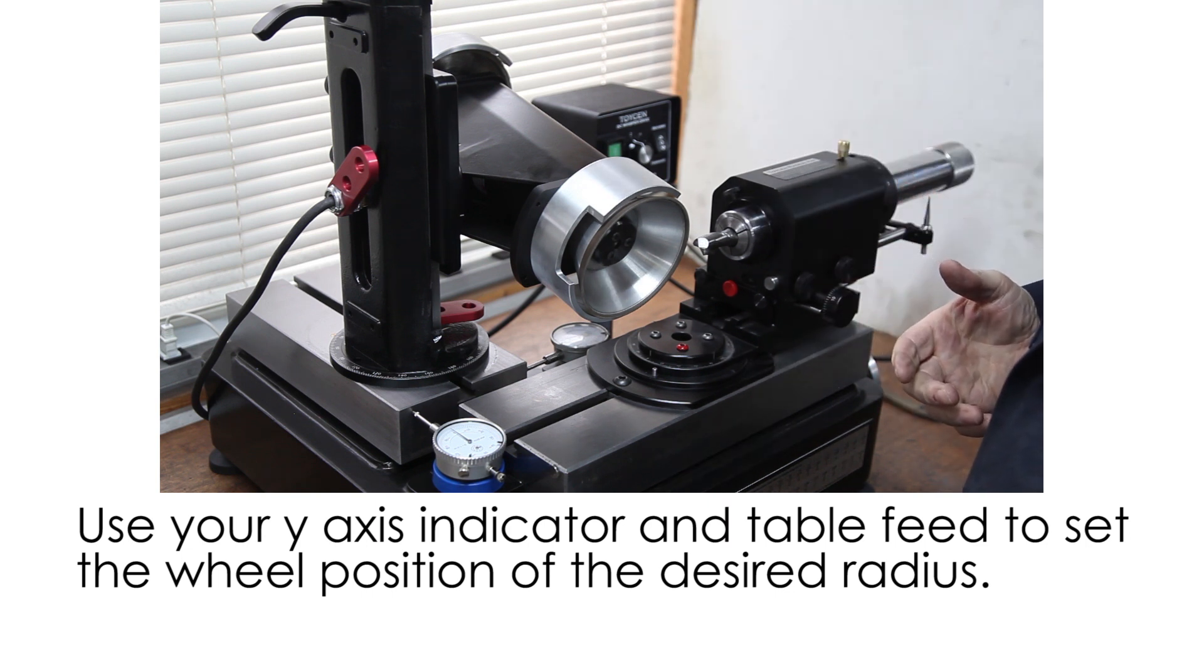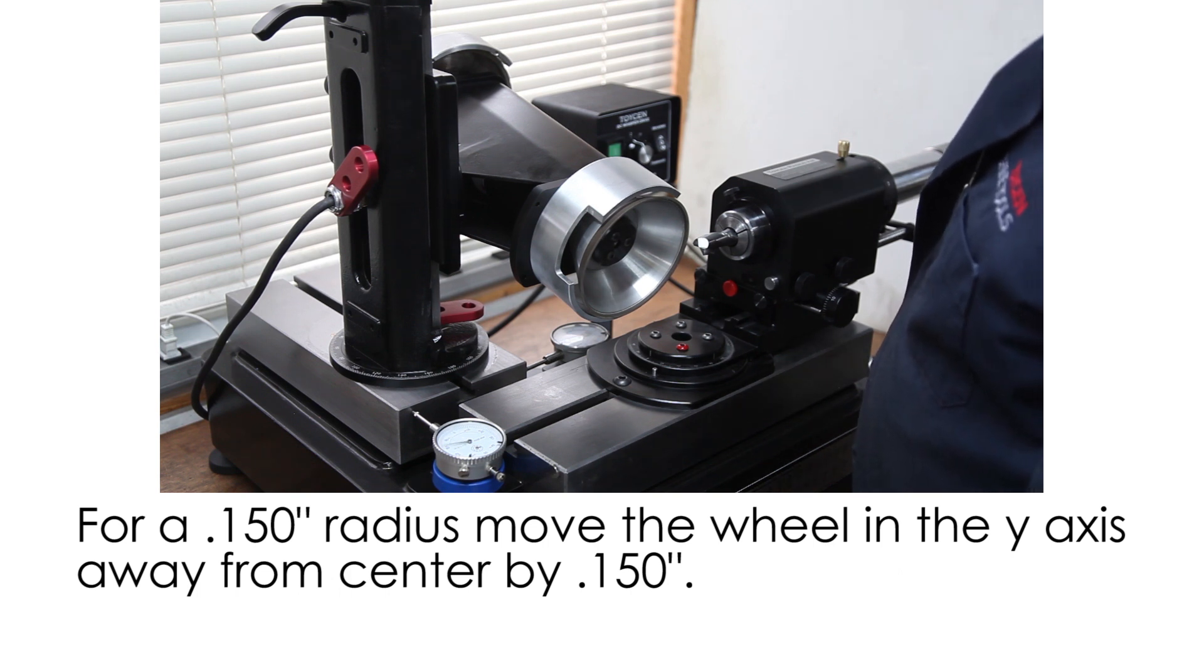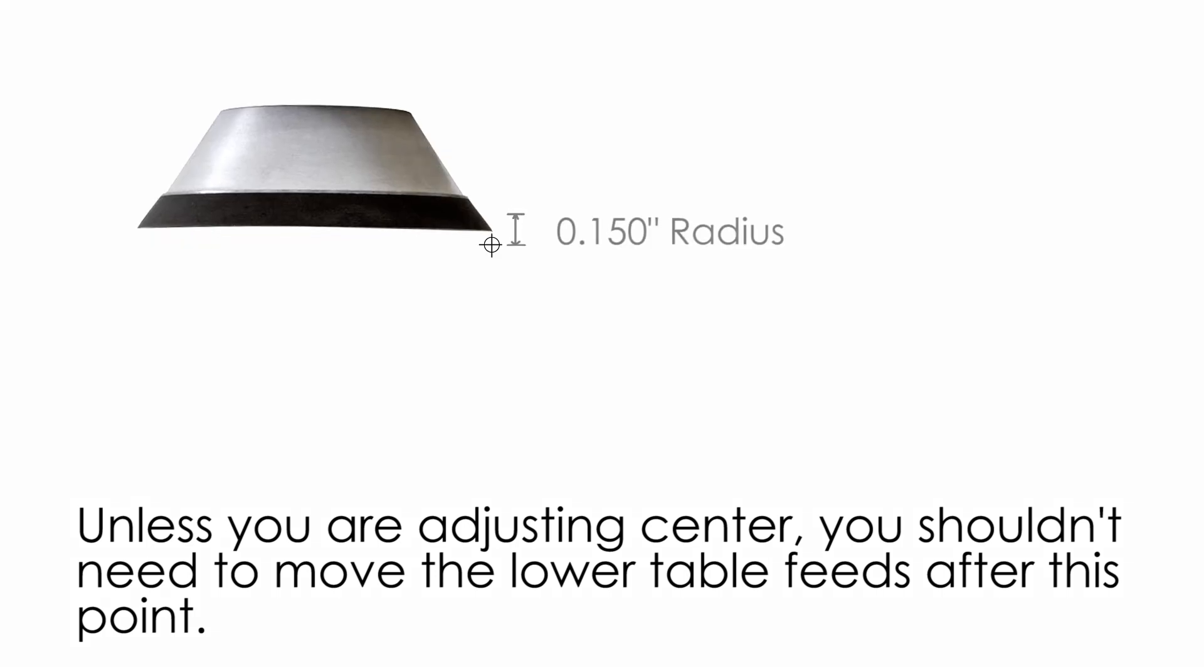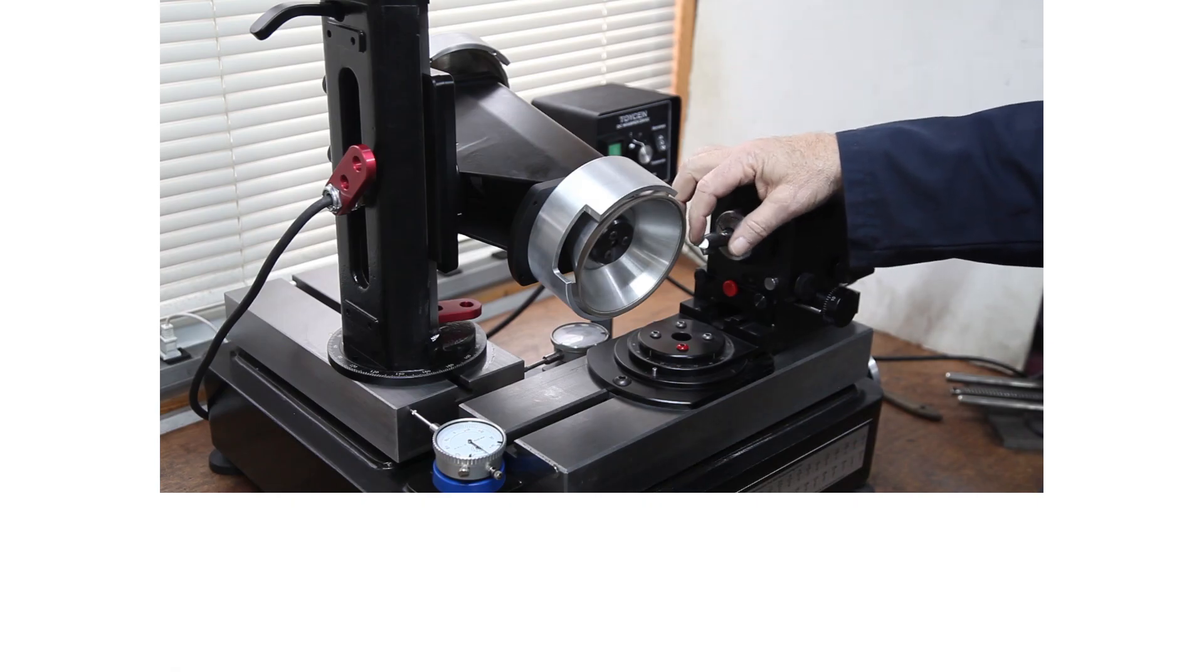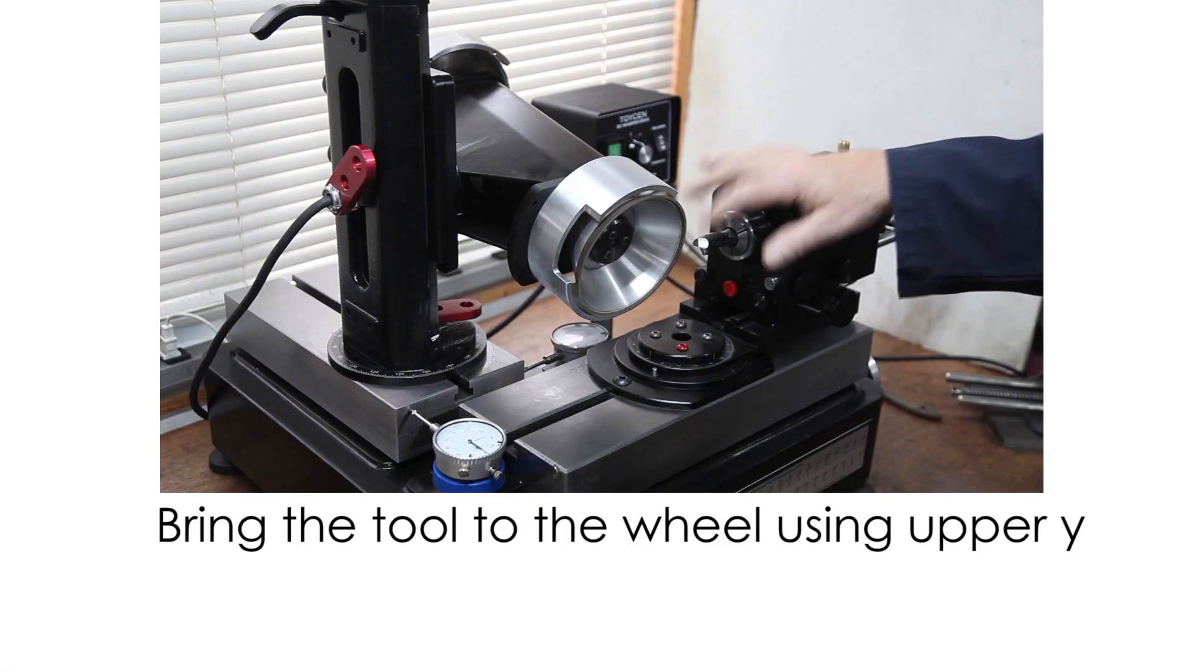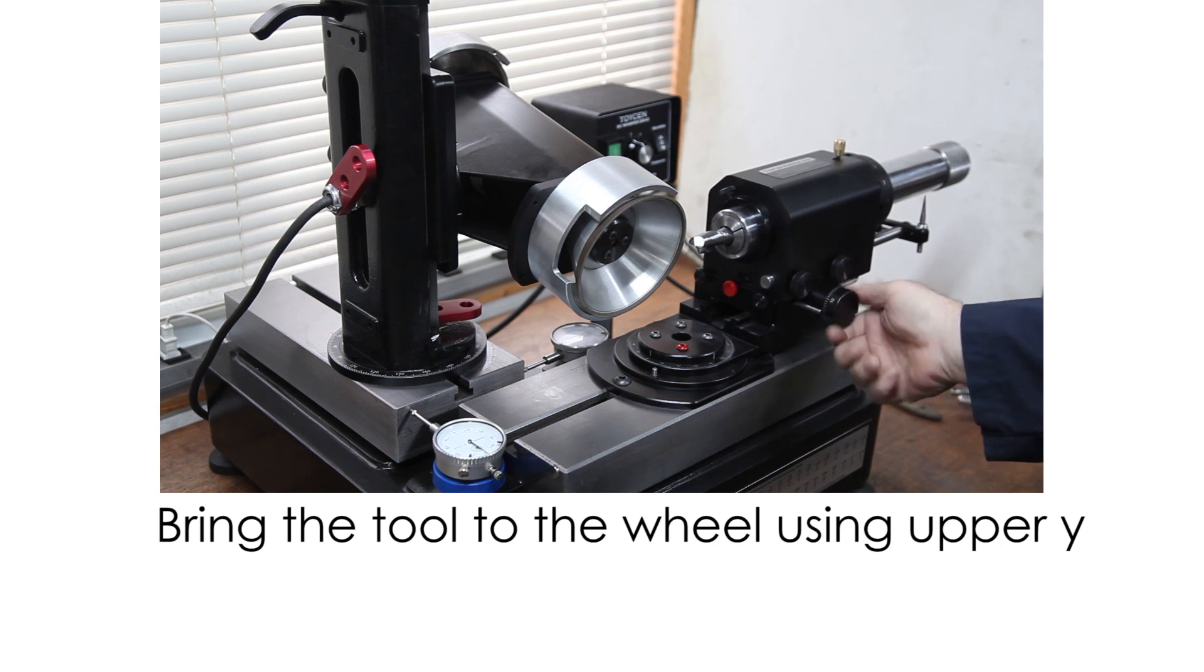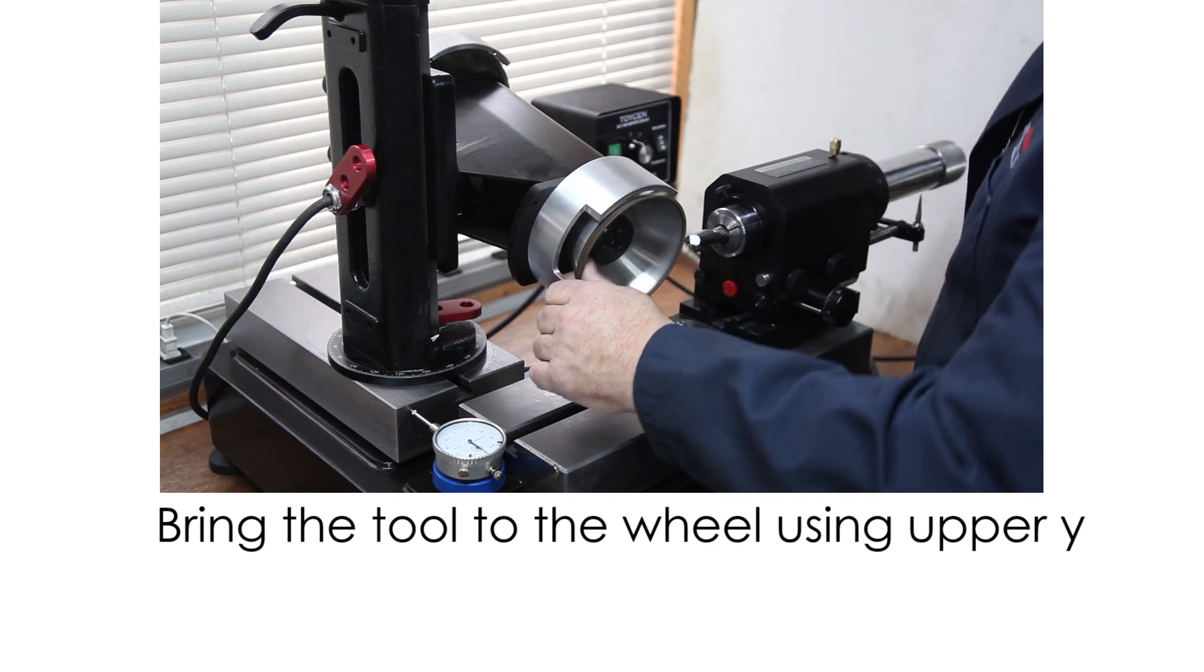So now we're going to decide what size of radius. In this case we're going to pretend it's 150,000. So we're going to move this away. So we move the y-axis back 150. Now the y-axis, the tool will pivot around 150 degree arc on this corner. So now the operation, because we're doing a bull nose, is to bring the tool to the wheel. Because the wheel would determine the radius. The wheel location will determine the radius that's gone on the tool.